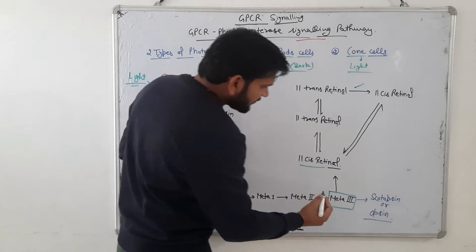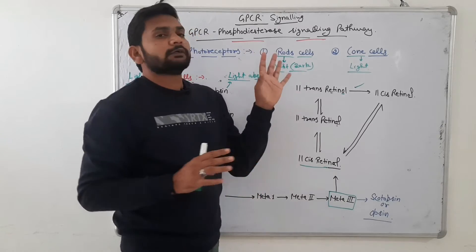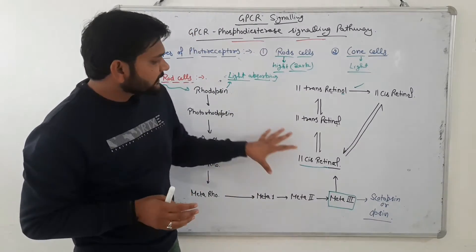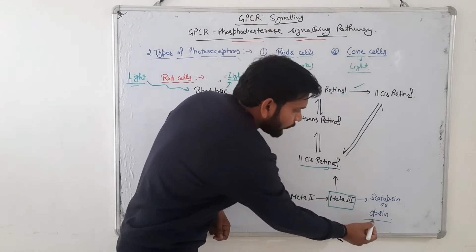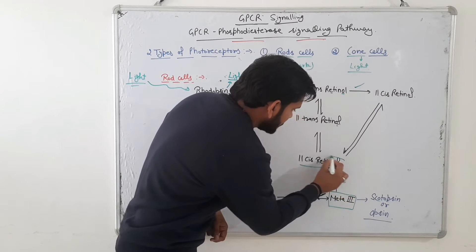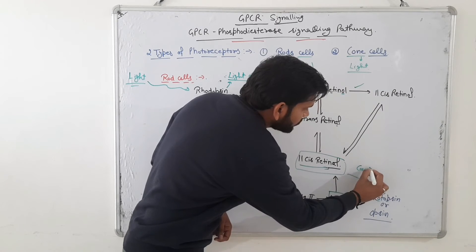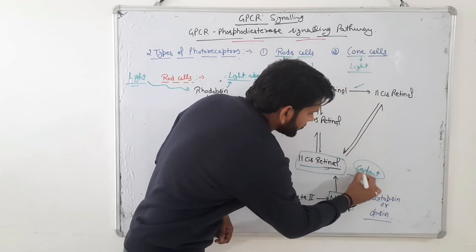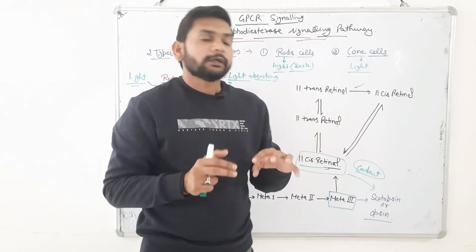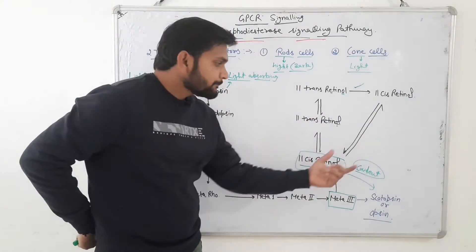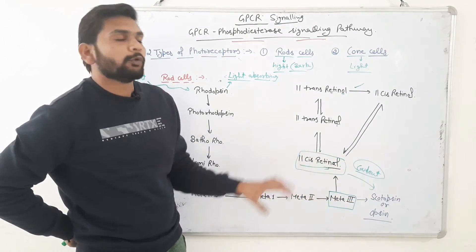Here, in the rod cells — in the retina of the eyes — 11-cis-retinal and opsin protein form a covalent bond. It is a very important point that a covalent bond occurs between 11-cis-retinal and opsin.